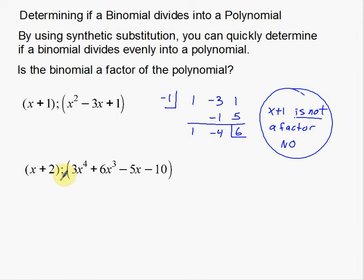Let me change colors here. So now what I want to do is I want to use synthetic substitution to see if this works. Now notice x to the fourth, x to the third, x to the first, I have a gap here. I don't have an x squared there. So when I set up my synthetic substitution, I got to remember that I'm going to have a gap there. So inside the box here, I'm going to have negative 2. That's the opposite of this number here. Then I have my coefficients of 3 and 6 and 0, don't forget the gap, and negative 5 and negative 10. This one's a little bit longer than the last one. It's going to take a little bit more. But again, the process still remains the same.